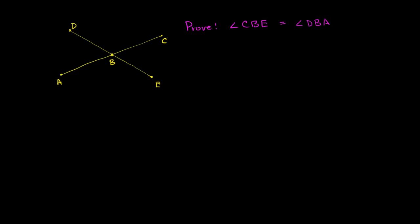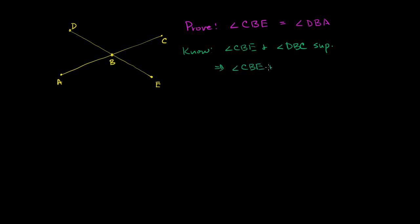So the first thing we know: angle CBE and angle DBC are supplementary. They are adjacent angles and their outer sides form a straight angle. So we know that angle CBE and angle DBC are supplementary, which means that angle CBE plus angle DBC is equal to 180 degrees.